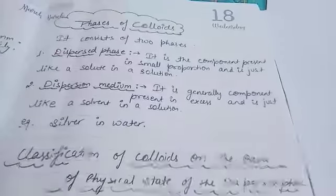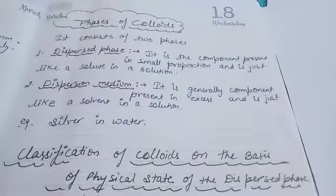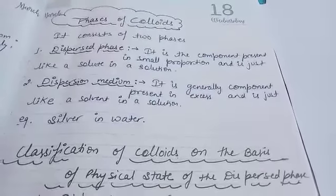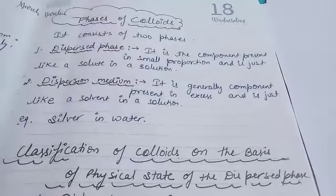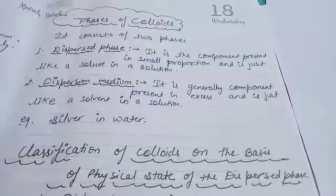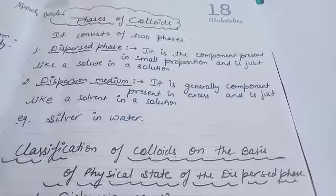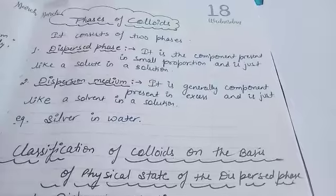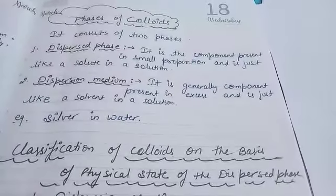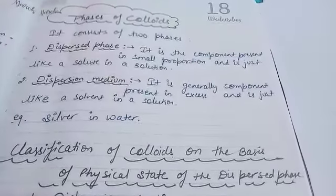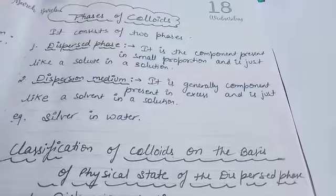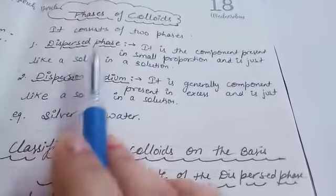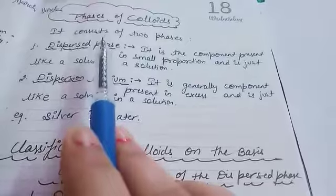Actually, the same topic is in 12th class also. Now in this, that phases actually, colloids consists of two phases: one is dispersed phase and another one is dispersion medium. Both are almost again, it's like solute and solvent. We have learned it, now that solute plus solvent it gives solution. The same condition, first of all dispersed phase.